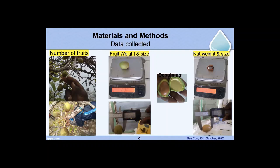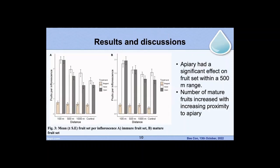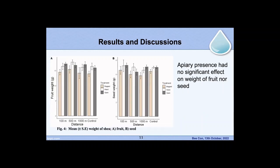The results indicated — on the left is immature fruits — that the apiary had a significant effect on fruit set within the range of 500 meters from the apiary. The number of fruits increased with increasing proximity to the apiary. We also looked at fruit weights and realized that apiary presence had no significant effect on the weight of fruits or the seed.